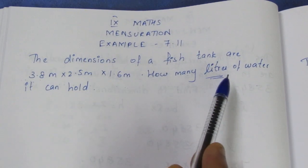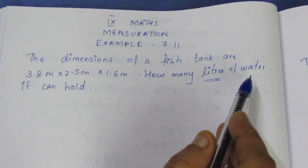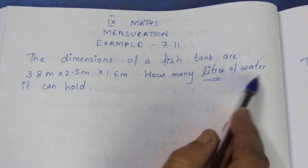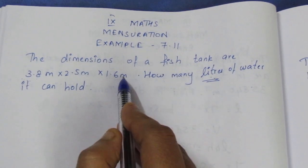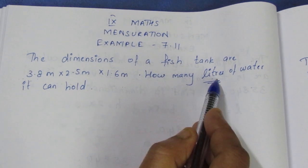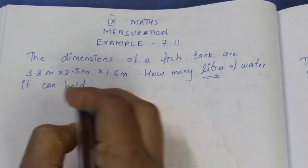So this is a cuboid. We need to find the volume. To convert cubic meters to liters, we multiply by 1000. One cubic meter equals 1000 liters.